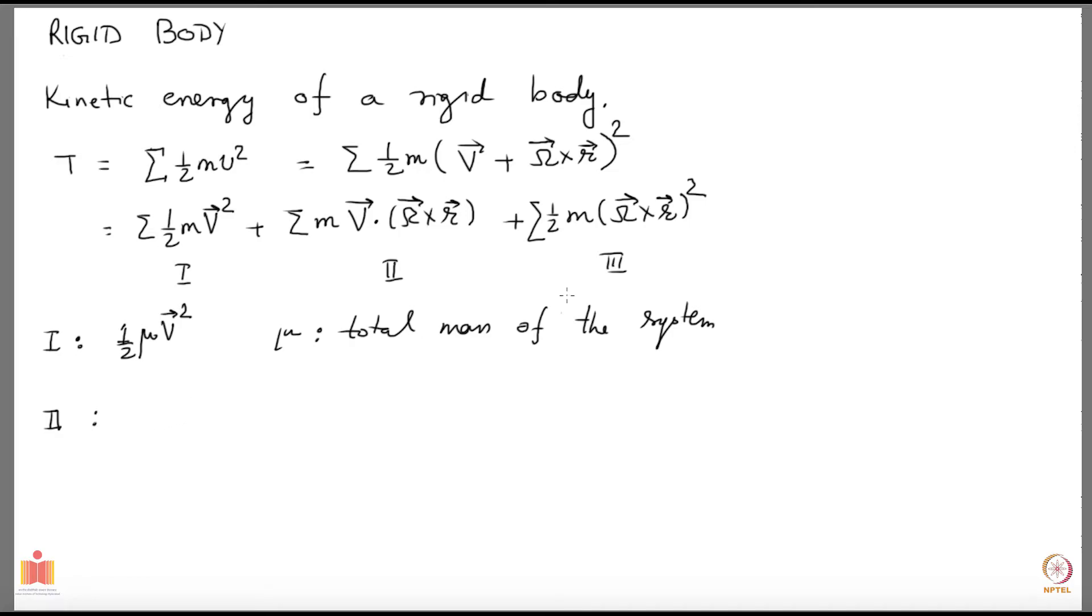I hope you already know this. A cross product, let us say you have A cross B and if you look at the ith component of this, this is written as epsilon ijk aj bk. This is how you write down the components of a cross product and that is what I am going to utilize here. Let us look at v dot omega cross r.